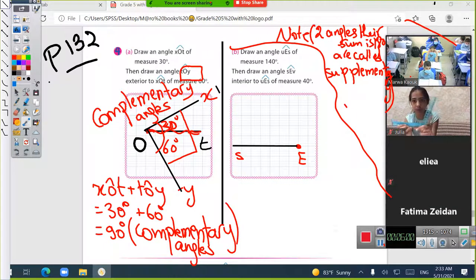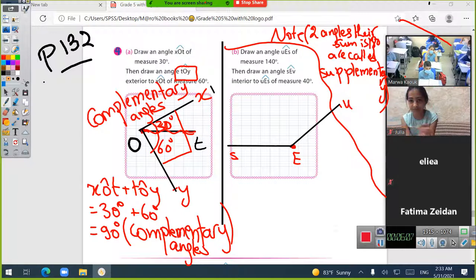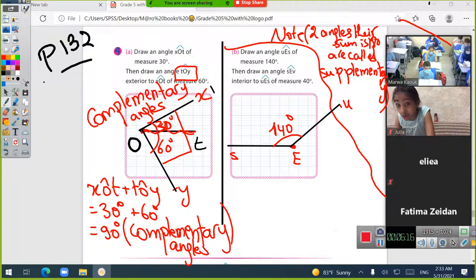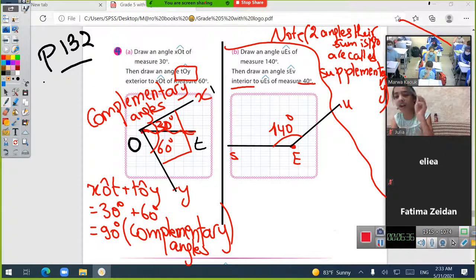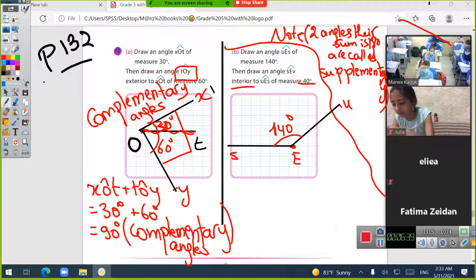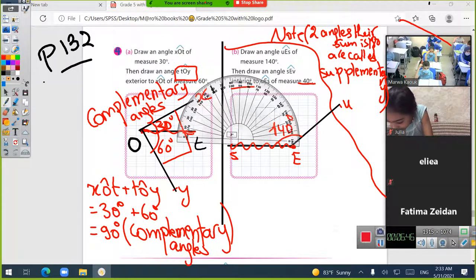It's 140 degrees. Pay attention to the figure. First step, I drew an angle of 140. Now, angle SEB—I should put my protractor on SE and draw an angle of 40 degrees.